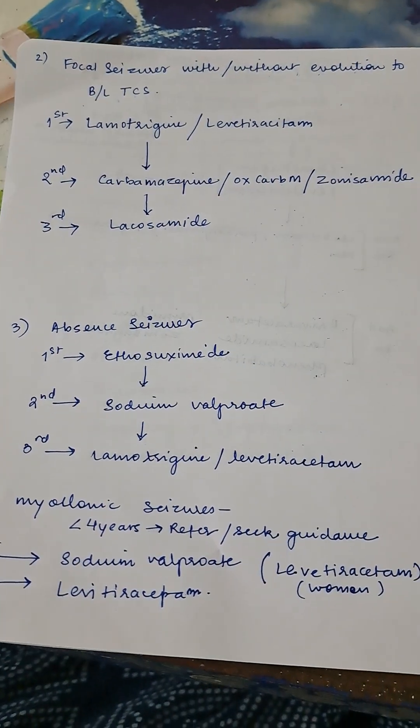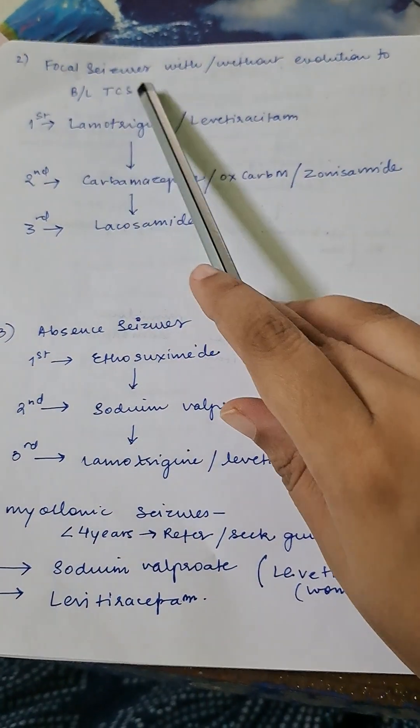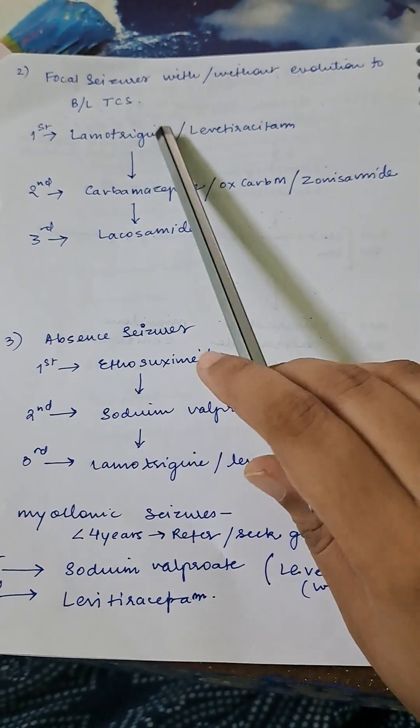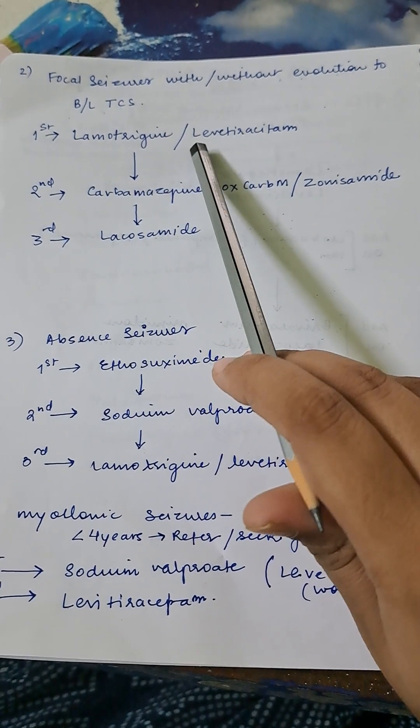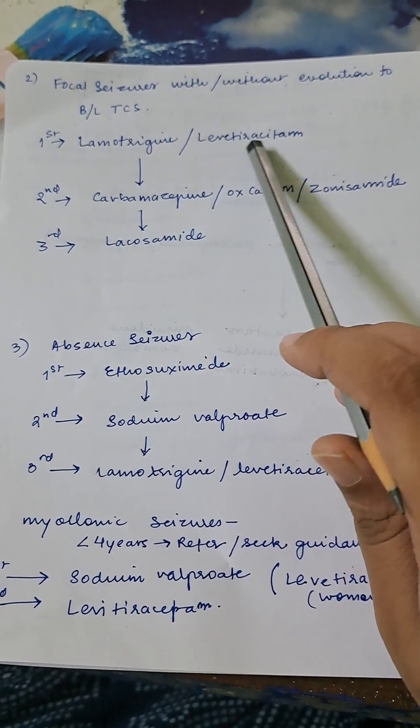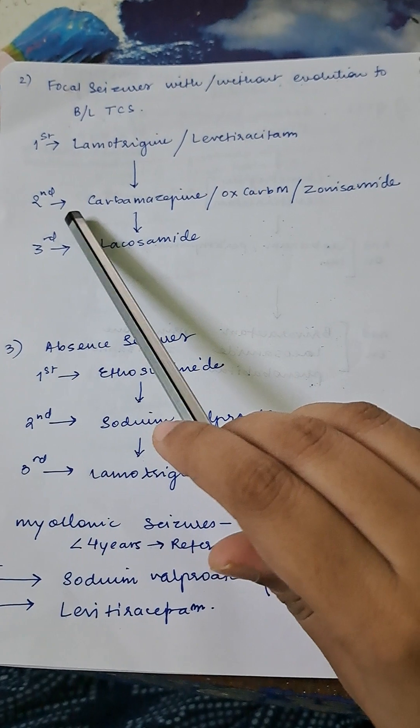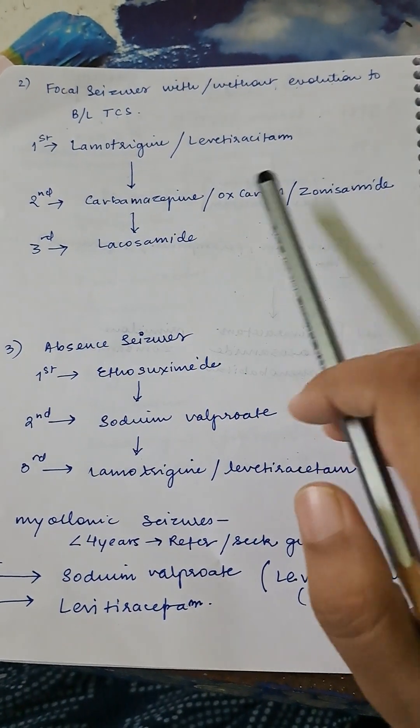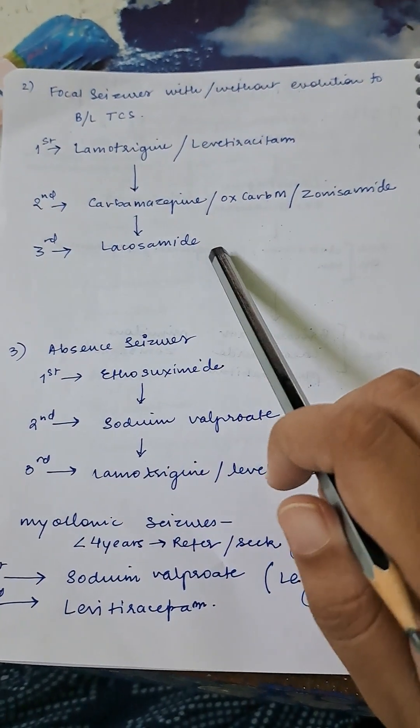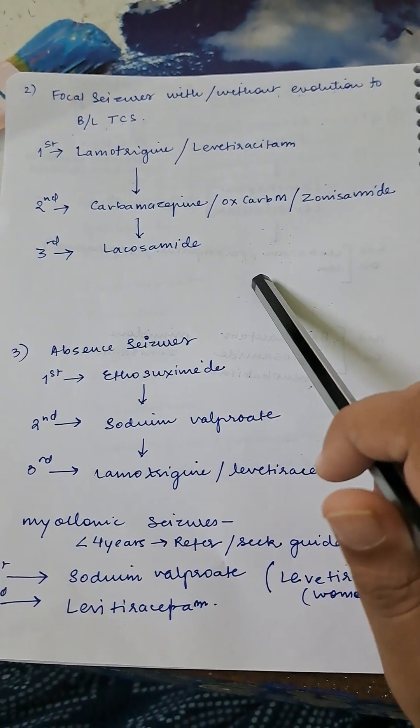First line in this case is lamotrigine—this is always asked in exam—or levetiracetam. Second line in this case will be carbamazepine, oxcarbazepine, and zonisamide. Third line will be lacosamide. Here you don't give sodium valproate.